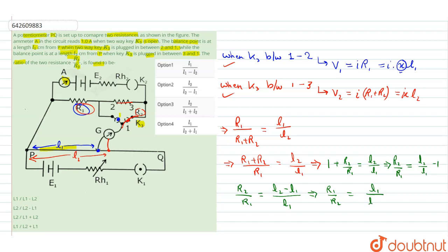R1 upon R2 will be L1 upon L2 minus L1. Option A is correct as it is L2 minus L1. This is the correct answer of the problem and we choose this option.